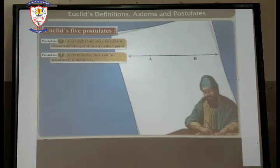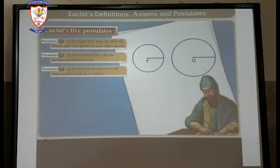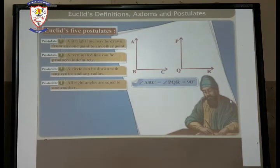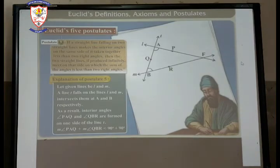Third postulate: A circle can be drawn with any center and any radius. As in the first circle the center is P, in the second circle the center is Q. So, a circle can be drawn with any center and with any radius. Postulate four: All right angles are equal to one another. For example, angle ABC is also of 90 degree. Angle PQR is also equal to 90 degree.